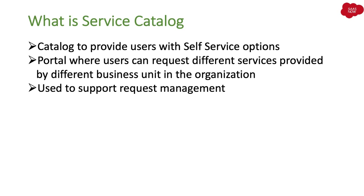If you do not have a request management portal or platform, you would have to walk in and request for your laptop, mobile, mouse, or different devices, or request leave. Service catalog is a way where you can submit requests for different services provided in your organization. It depends on your organization what kind of services they have onboarded in this service catalog — that's the reason it's called a service catalog.